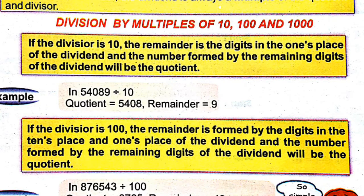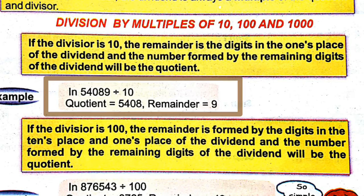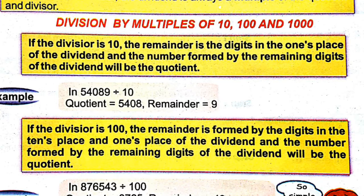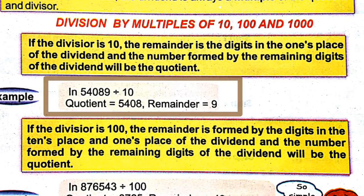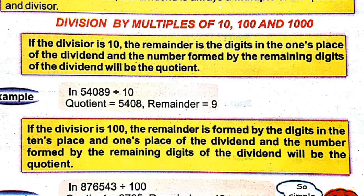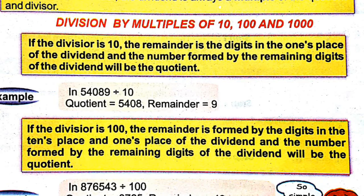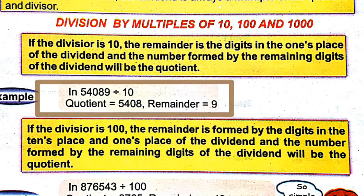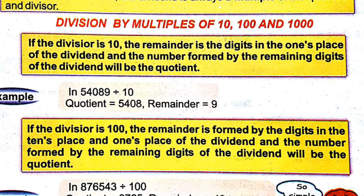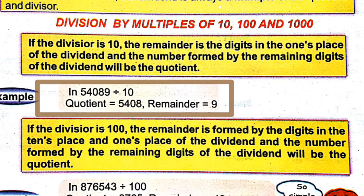For example, if we divide 54089 by 10: the ones place digit is 9, so 9 is the remainder. The remaining digits are 5, 4, 0, 8, so the quotient is 5408.